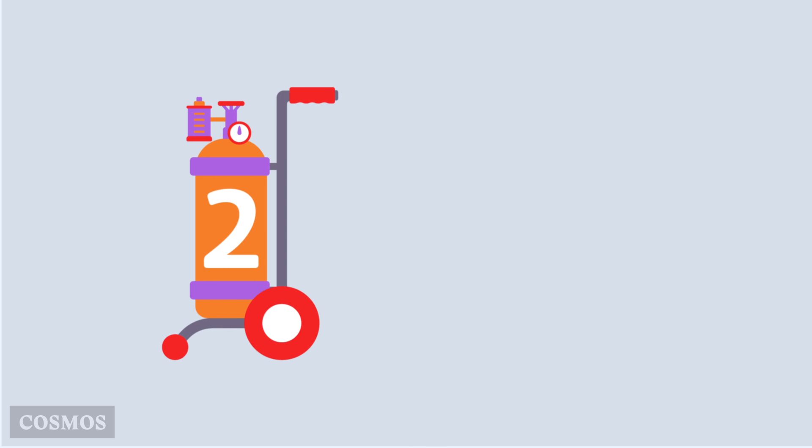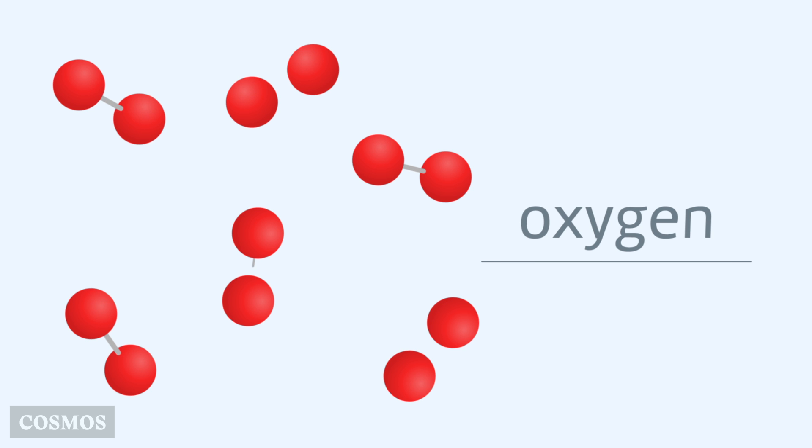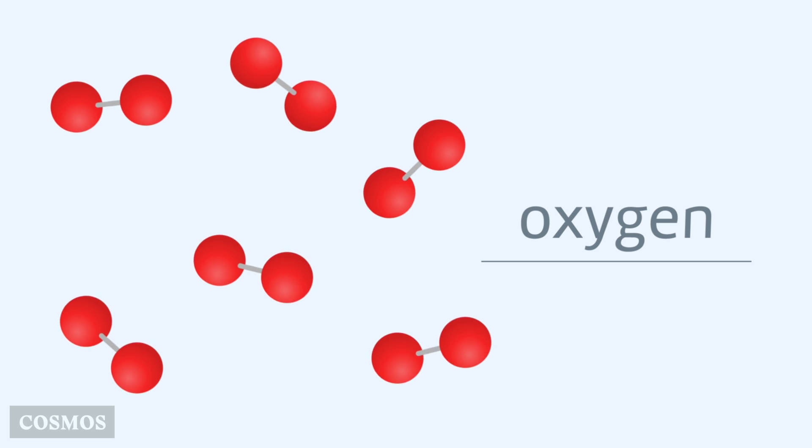We can see the second way of arranging atoms if we take a closer look at the element oxygen. Oxygen atoms join together in pairs. Each pair is held together by a chemical bond, an attractive force that binds the atoms together.